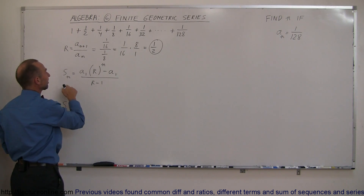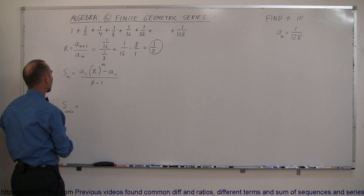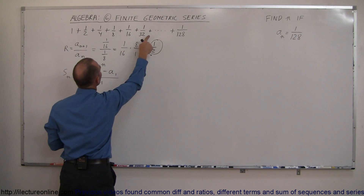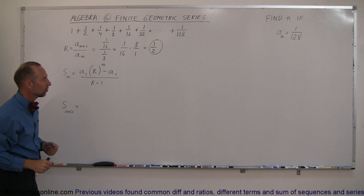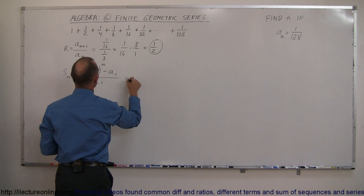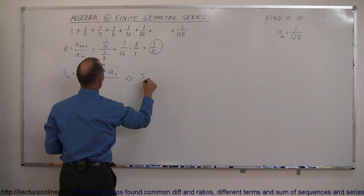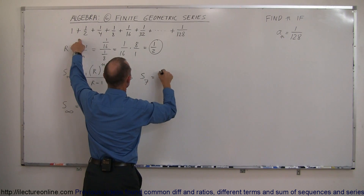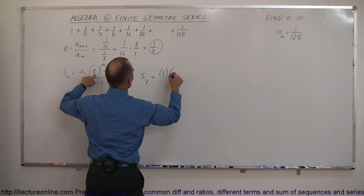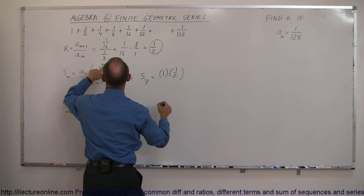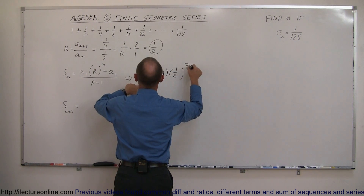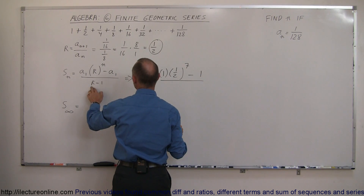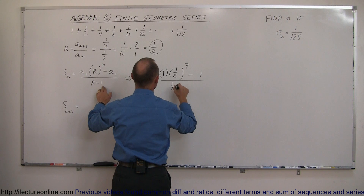If we want to find the 7th number in the series — 1, 2, 3, 4, 5, 6, 7 — we use the formula: S sub 7 equals A sub 1, which is the first term, times the common ratio (1/2) raised to the n-th power, minus the first term in the series, all divided by the common ratio minus 1, which is 1/2 minus 1.